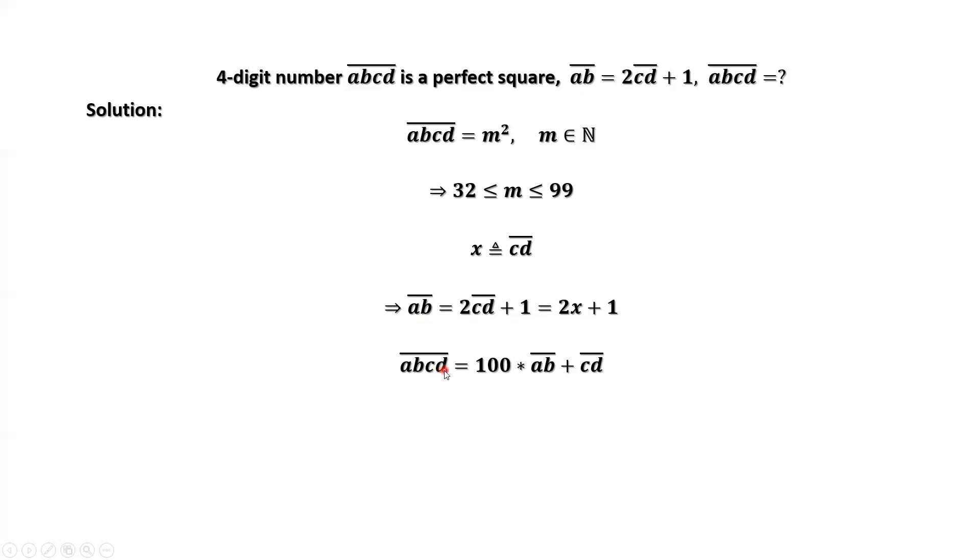ABCD, this 4-digit number, we can rewrite as 100 times the first two digits plus the last two digits. 100 times the first two digits is also a four-digit number, which is AB00. Then plus CD equals ABCD. We replace AB in terms of 2X plus 1, CD in terms of X. This is ABCD.